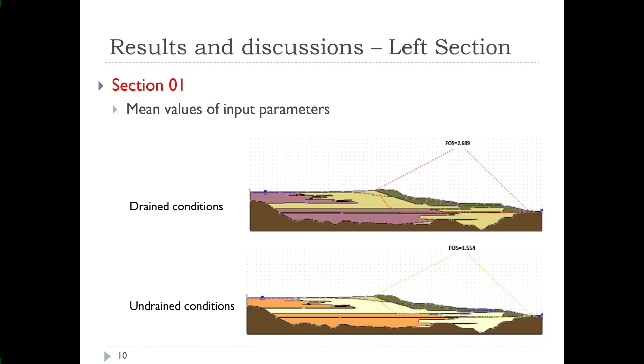This is just defining the parameters that we used. On the left section, which is section 01, if we use the mean values of the input parameters, you can see the factor of safety calculated for both drained conditions and undrained conditions, and the resulting location of the factor of safety. For drained conditions, we have a factor of safety of 2.689. For undrained conditions, we have a factor of safety of 1.554. So still quite high and certainly in safe conditions.